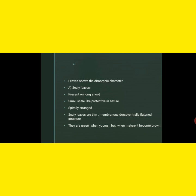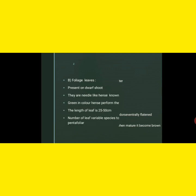Leaves also show dimorphism: scaly leaves and foliage leaves. Scaly leaves are present on the long shoot or branches of unlimited growth, arranged spirally. They are small scales present at the tip and perform a protective function. Scaly leaves are membranous and dorsiventral. When green they perform photosynthesis; at maturity they perform the function of protection.